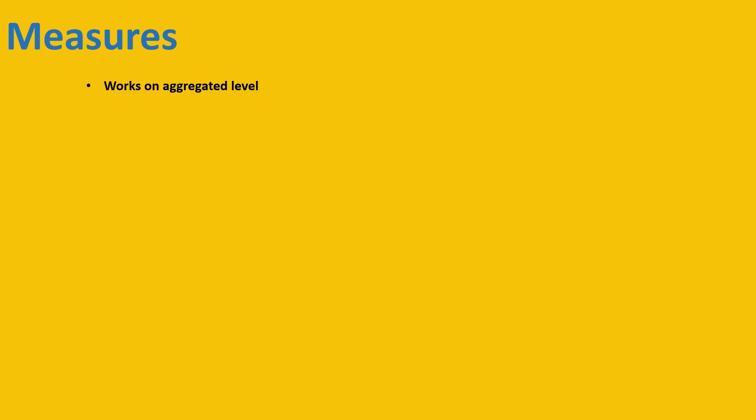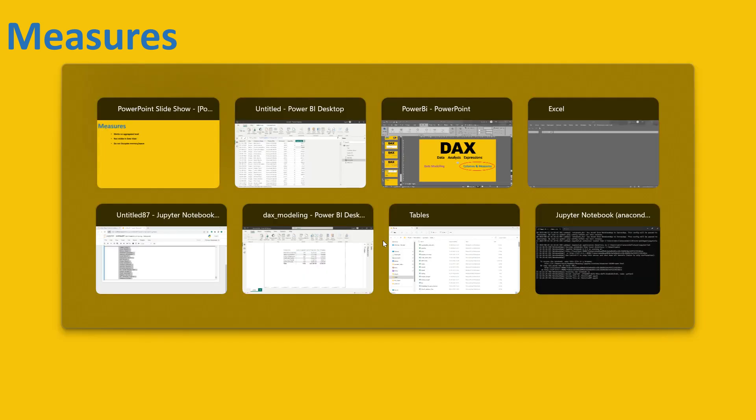Now let's move forward and understand measures. The key points to understand are: measures work at the aggregated level — they do not work on the individual row level. Next, measures are never visible in your data view. They are created on the fly and used on the fly. And they do not occupy any space in memory.